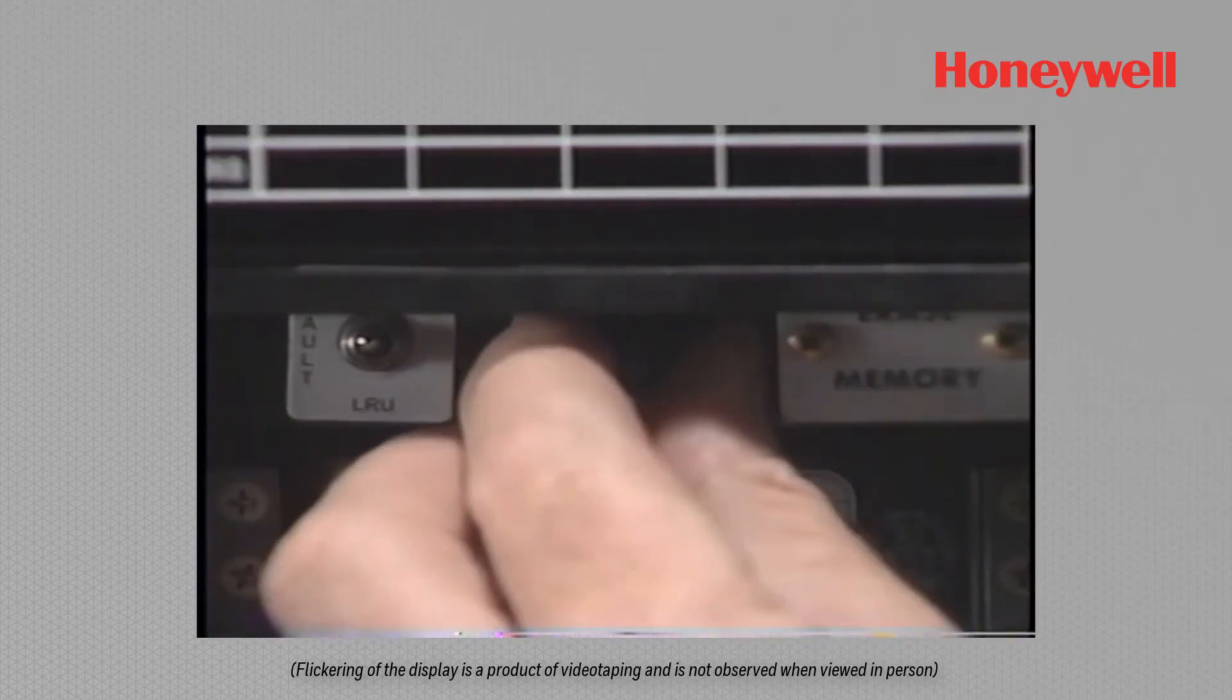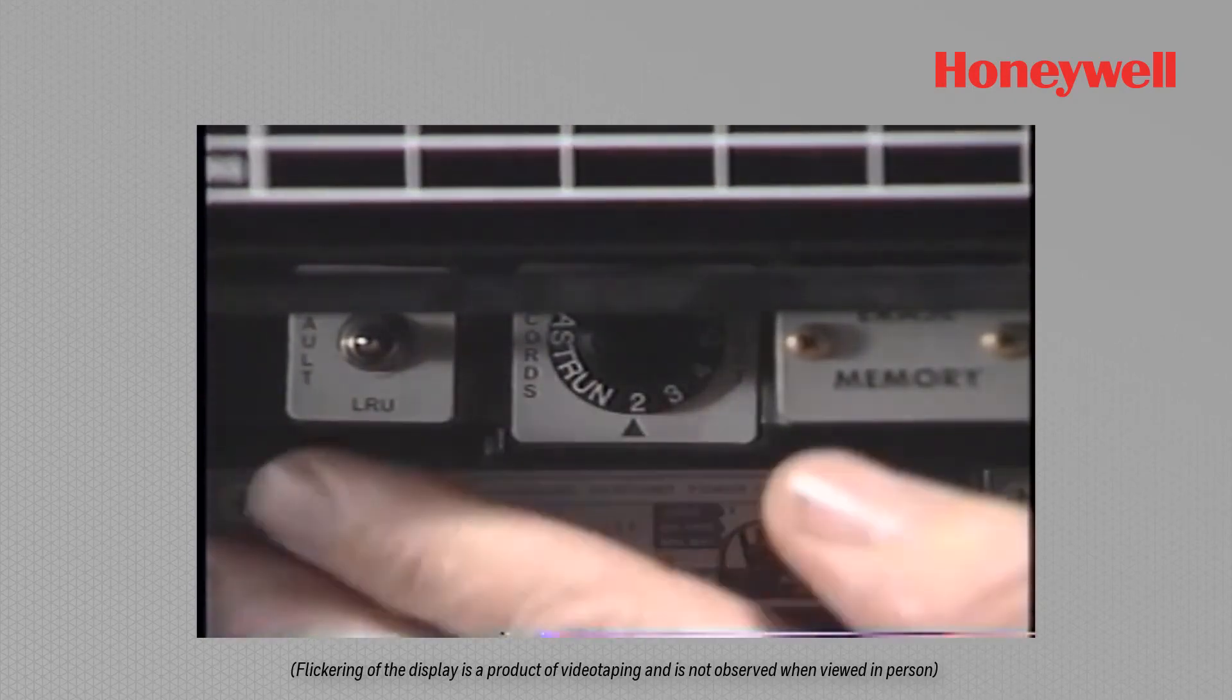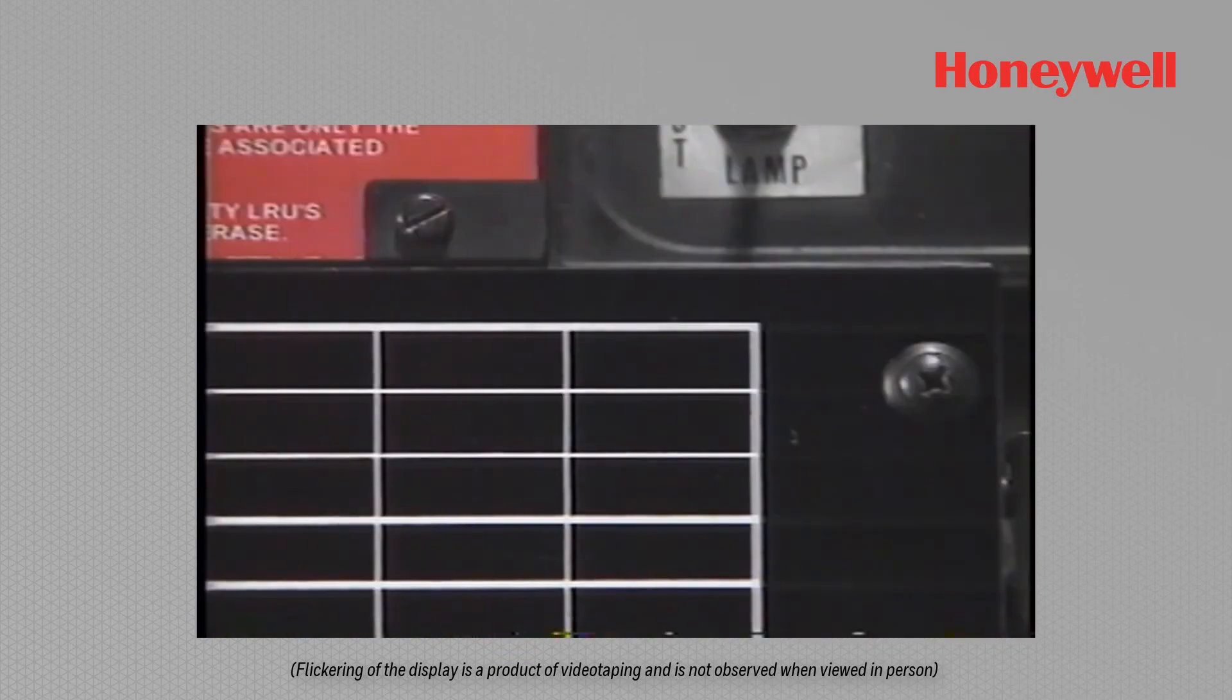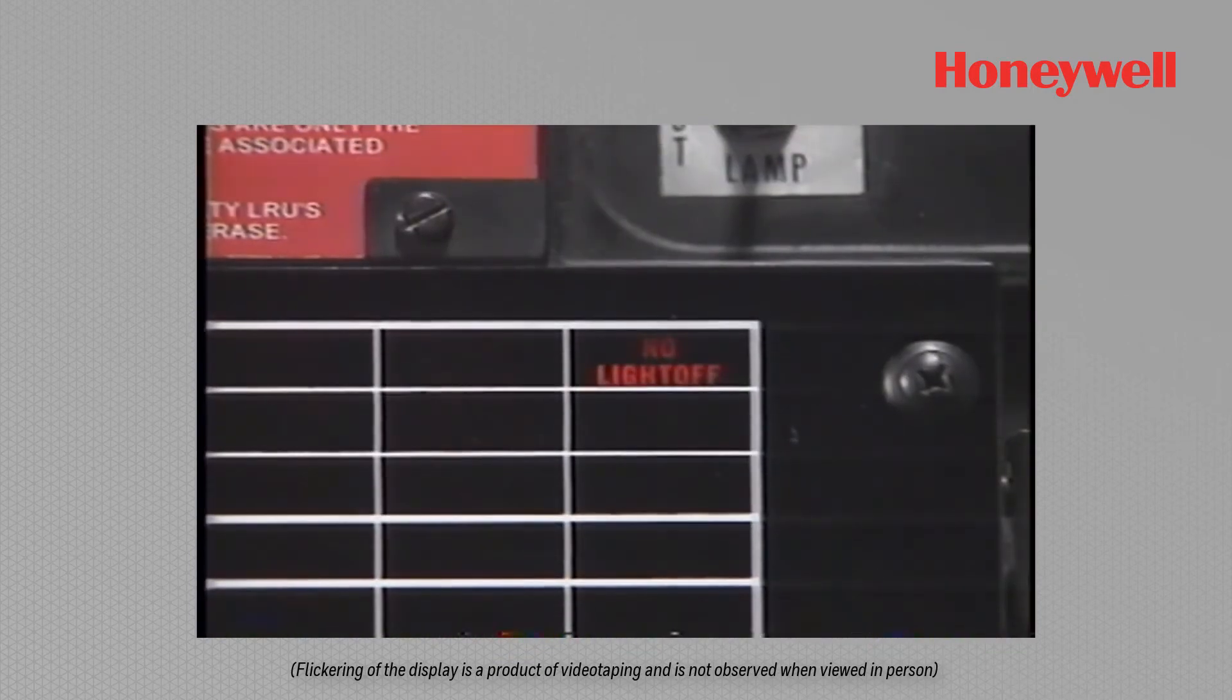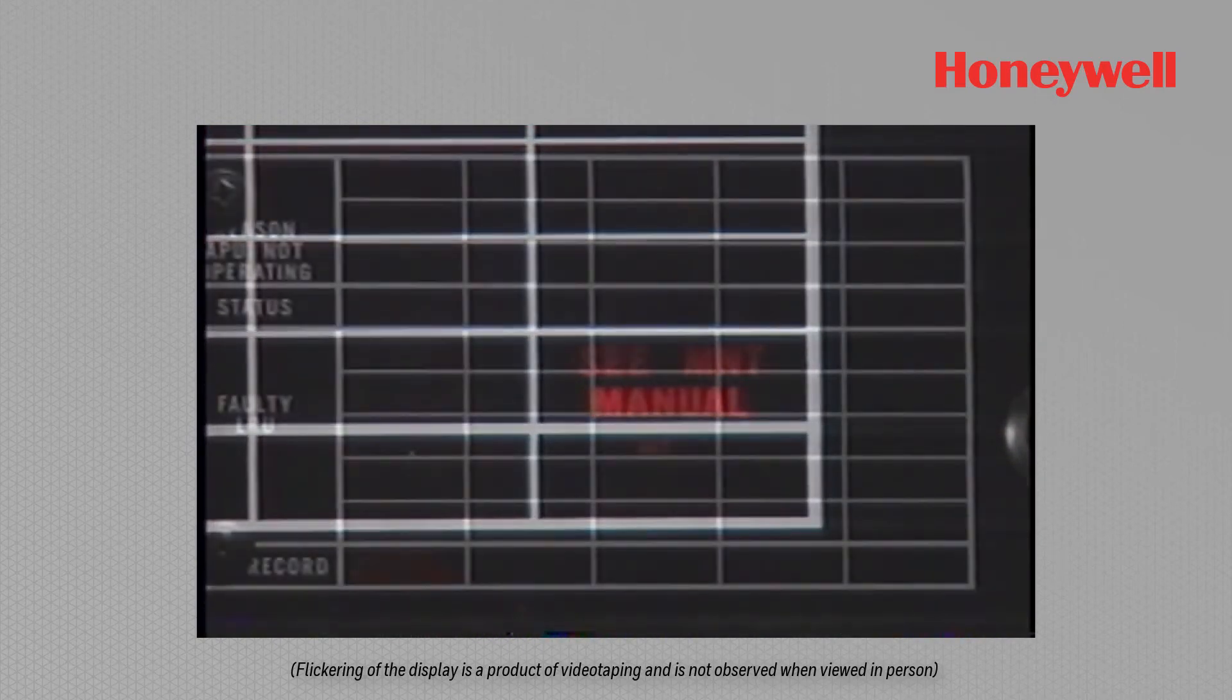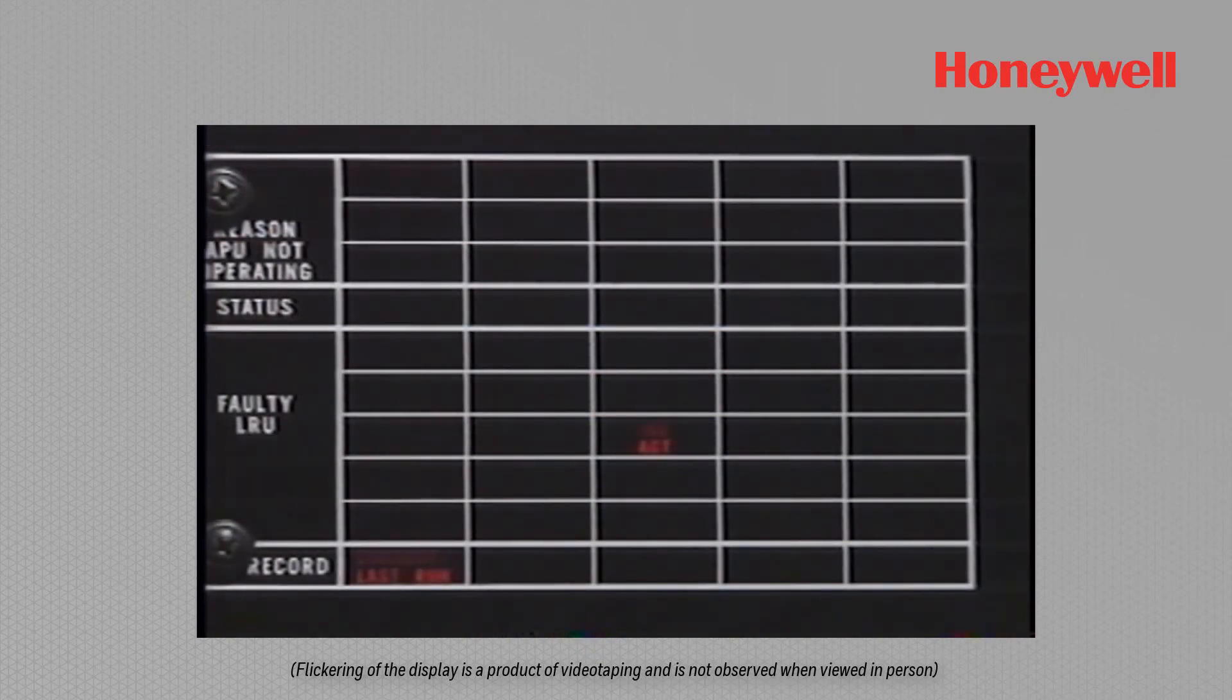If you rotate the record select switch to shutdown 2 and look at the display, it says no light off. The faulty LRU says that it did not detect an electrical fault and to see maintenance manual. That's the beauty of this new display. It will always tell you something.